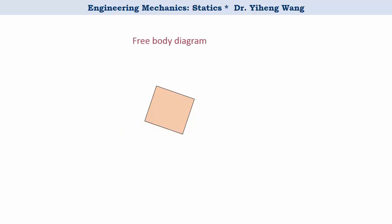We isolate the crate from its surroundings and state the forces acting on it. First, we have the weight force W acting at the gravitational center of this object. Because we do not concern ourselves with the tipping over scenario, we do not need to worry about moment equilibrium, so the actual location of the gravitational center is not important. Next, we have the normal force normal to the contacting surface acting at point O. The exact location of point O is not important here. Because the impending motion is sliding down the surface, the frictional force is tangent to the contacting surface and opposite to impending motion.